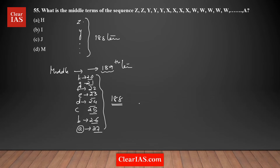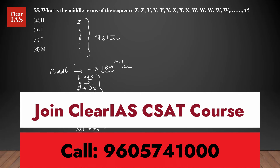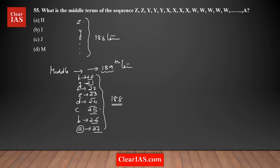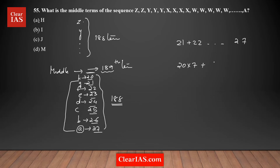I'm checking whether the cumulative count reaches 188. Starting from G: the repetitions from G to A are 21, 22, 23, 24, 25, 26, 27 — that's 7 terms with a base of 20 each. So it's 20×7 plus (1+2+3+4+5+6+7) = 140 + 28 = 168 terms. From G back to A, there are 168 terms.